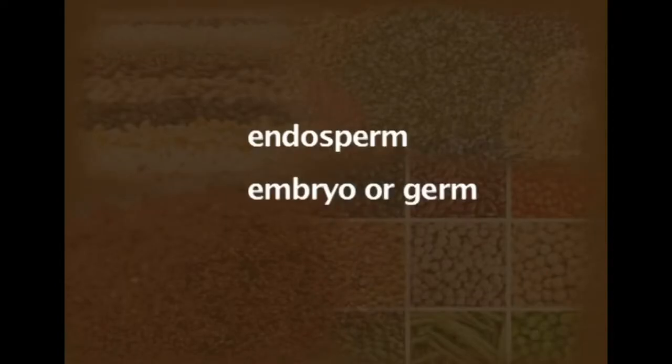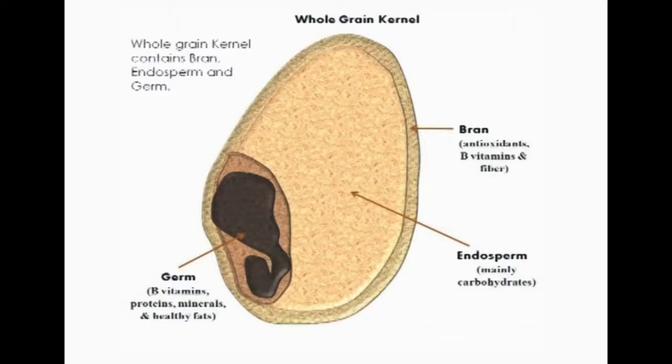Coming to the structure of the cereal grain, it is broadly the same for almost all cereals and is basically divided into two components. The major component is endosperm, which is about 80% of the cereal grain, and the next part is the germ. Both the endosperm and the germ are covered to about 90% by a layer called the bran layer, which is composed of three sub-layers.